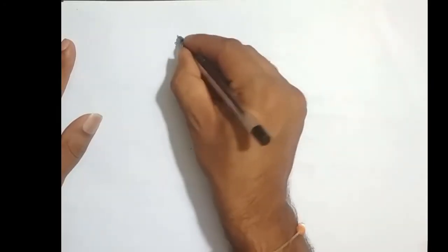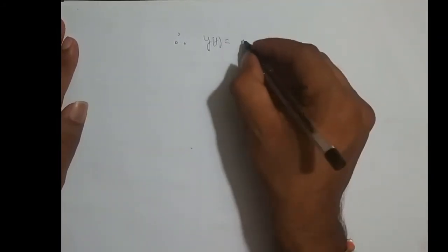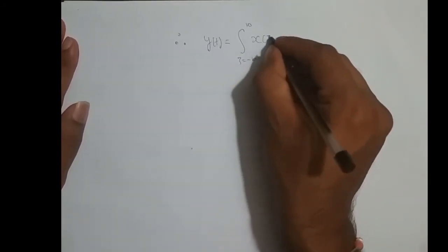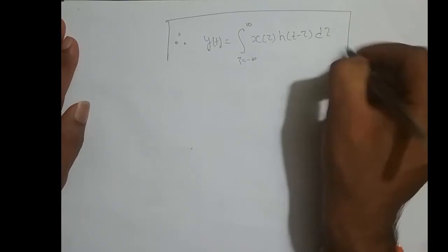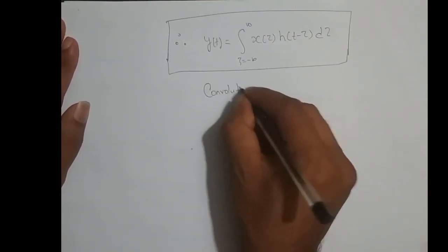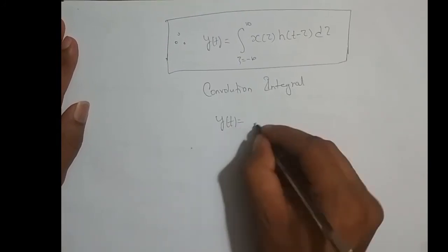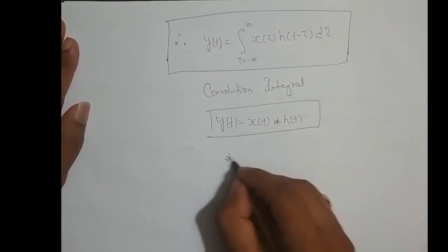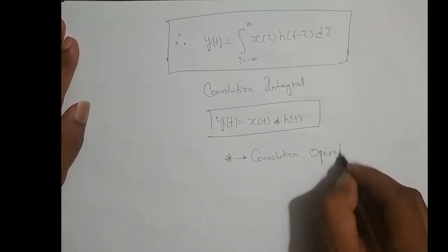Therefore, y of t — the output of a continuous time LTI system — is equal to the integral with tau varying from minus infinity to infinity of x of tau times h of t minus tau d tau. This is the equation for the convolution integral. In compact form, we can write it as y of t equals x of t star h of t, where star is the convolution operator.